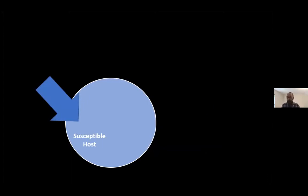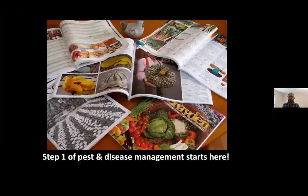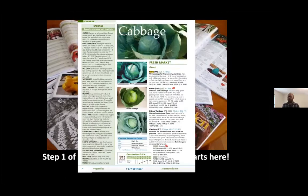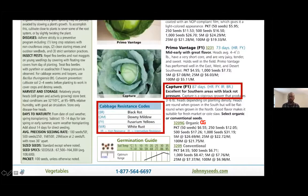We'll start by thinking about our host. In terms of managing disease in our garden, the first thing we have control over is whether or not we have a susceptible host. Step one of pest and disease management starts at the seed catalog — what varieties you're growing. As an example with cabbage, here's from the Johnny's catalog. If we zoom in, they have cabbage resistance codes telling you that some varieties with 'BR' next to them are resistant to black rot, downy mildew, fusarium yellows, or white rust.